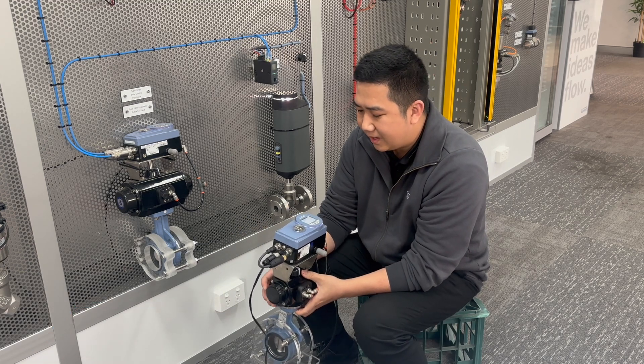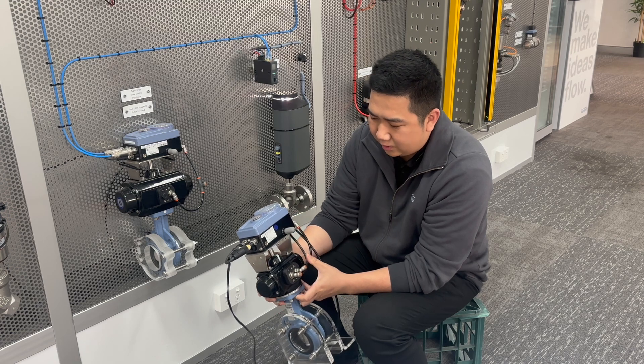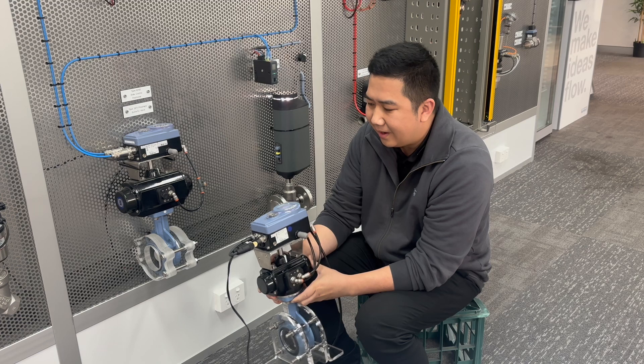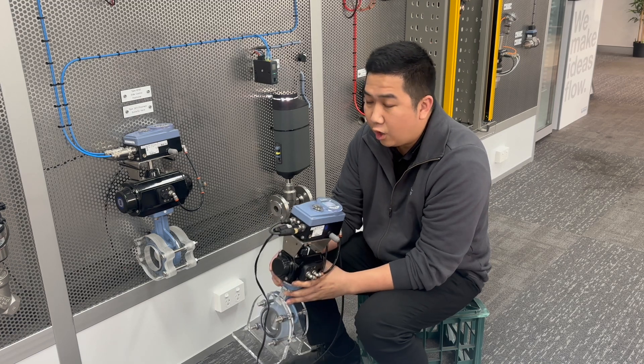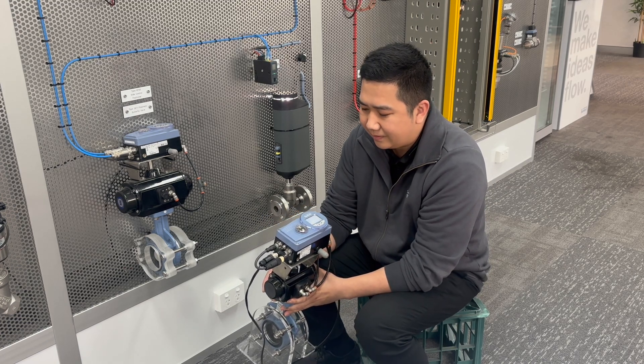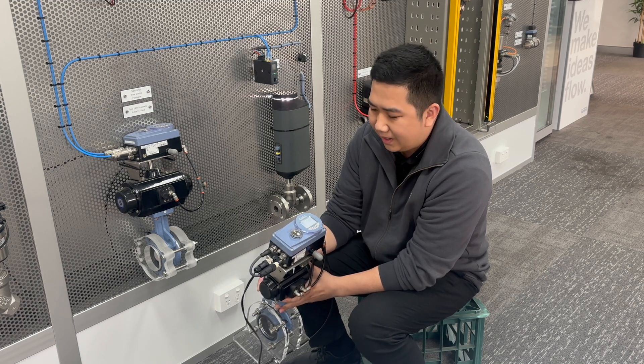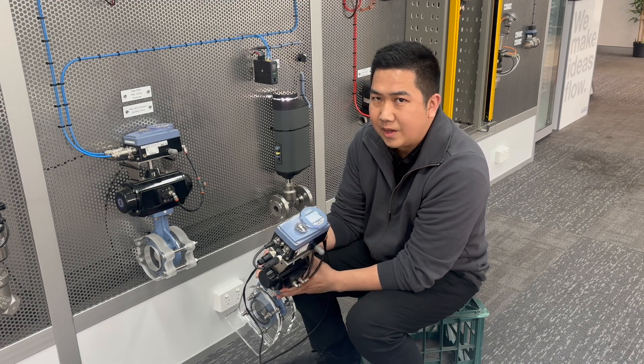This positioner usually comes assembled, complete, and tested from the factory if you purchase it on a complete valve. Today I'll be going through the common setups with the 8792, showing you how to extrude the unit and going through the user menu.